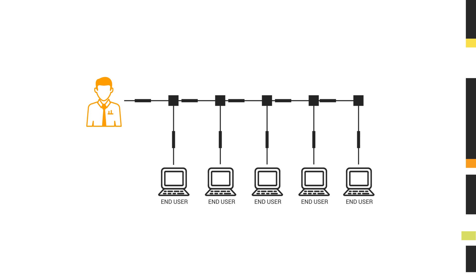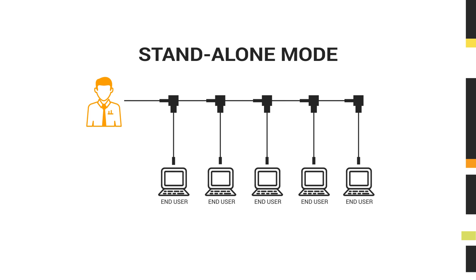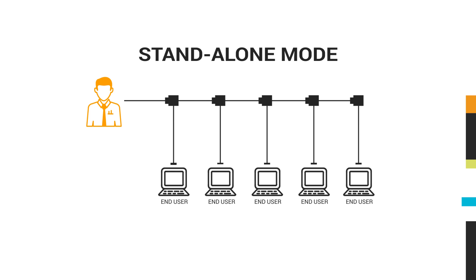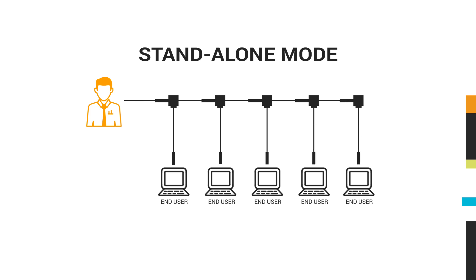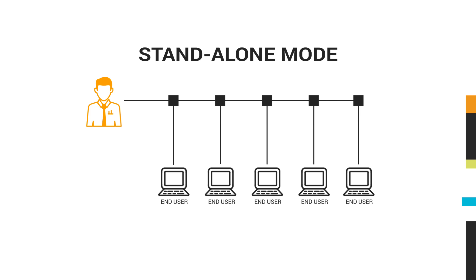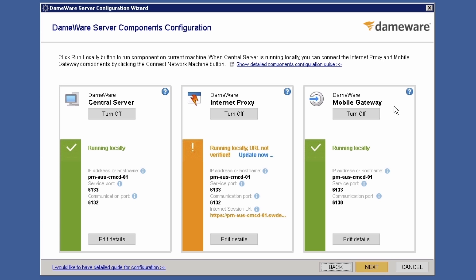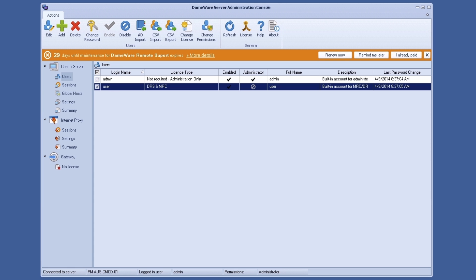Deploying DRS in Standalone mode is as simple as installing it on each user's workstation. In Standalone mode, DRS makes connections directly to the end user's computers without the need for the Daymor Central Server. Keep in mind, however, that deploying in Standalone mode means you will not be able to centrally manage Daymor users and share global host lists, or make connections to computers outside your firewall with the new Internet Sessions feature.